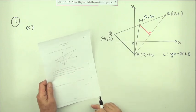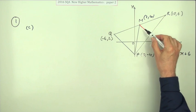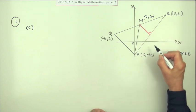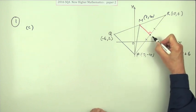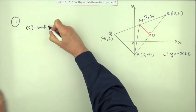And part C, show that L passes through the midpoint of PR. In other words, show that this line is actually a perpendicular bisector. I'll just call that midpoint N there, but I'll just say midpoint of PR.